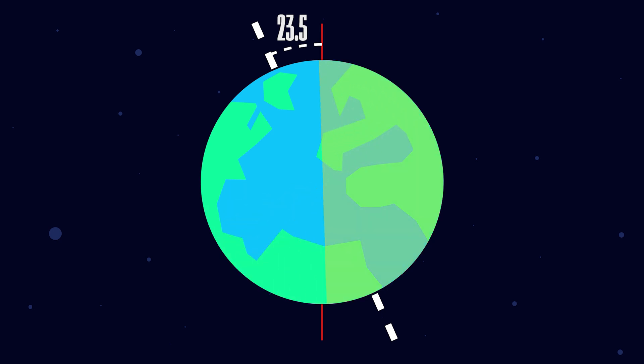This tilt means that different parts of the Earth receive varying amounts of light throughout the year, leading to seasonal changes.